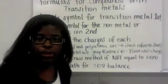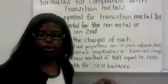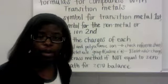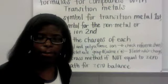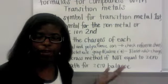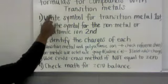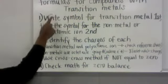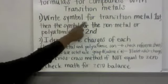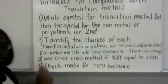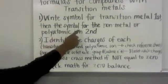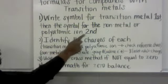So these are the actual steps for writing the chemical formulas. They're pretty much the same as you would for a basic ionic compound. It is a little different because we have to distinguish that we have our transition metals. So step one when writing the formulas for compounds with transition metals: you write the symbol for the transition metal first, just like you would normally write the metal first, then the symbol for the non-metal or the polyatomic ion second.